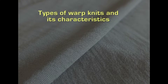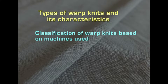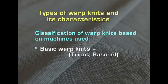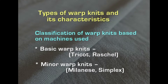Warp knits are classified based on the machines used for their construction. Basic warp knits are tricot and rachel, and minor warp knits are milanese and simplex.